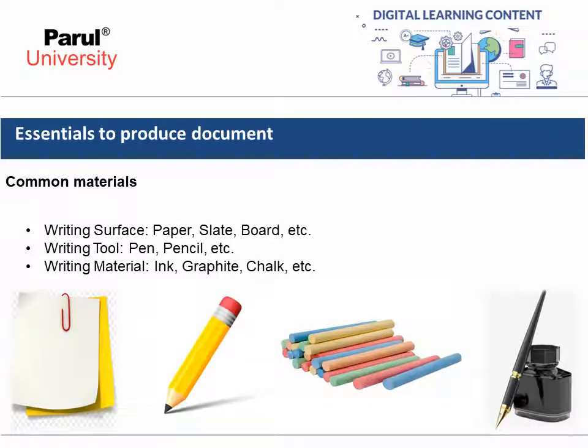That's all about the crimes which are related to documents. Now let's discuss the essentials which are required to produce a document. Below are the common materials. In order to produce any kind of document you must have three major materials: first is writing surface, then you must have a writing tool, and you must have writing material.